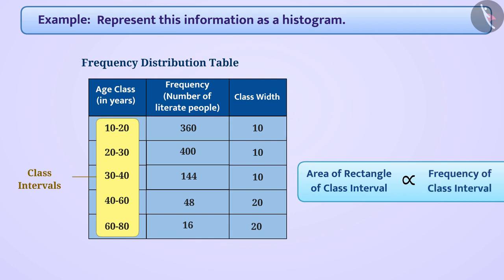For this, we will first find the width of each class interval and choose the lowest class width. That is, here we will choose 10.